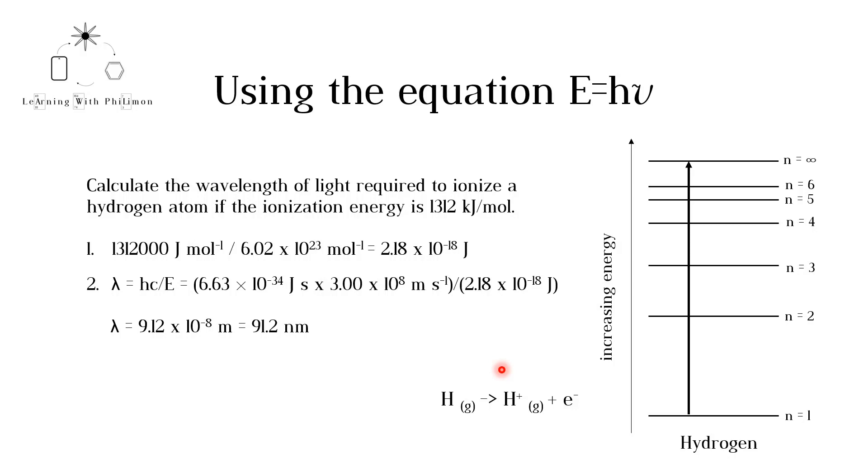Hydrogen has 1 electron which occupies the first energy level, as depicted in this diagram. For hydrogen to be ionized, the electron must gain enough energy to transition to the energy level n is equal to infinity. At this point, the electron has escaped the atom and you have formed a positive hydrogen ion, H+.